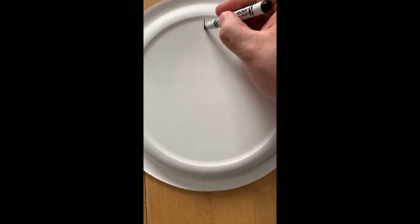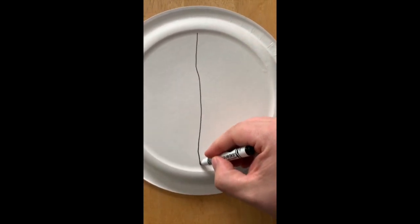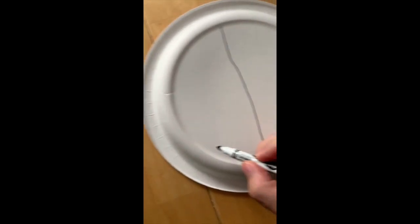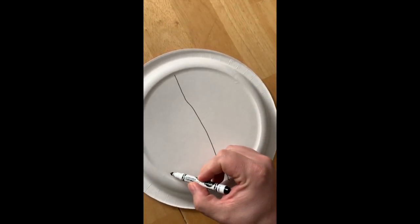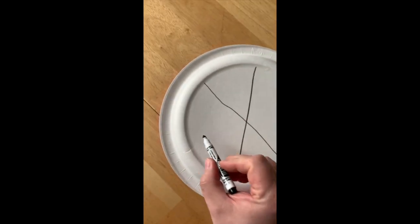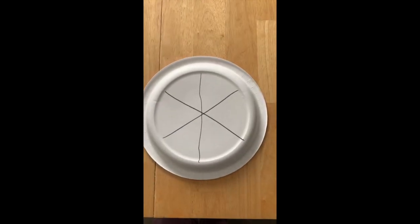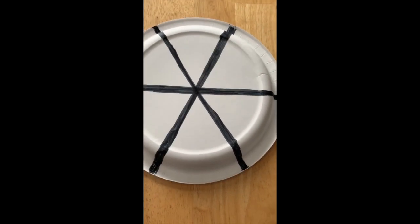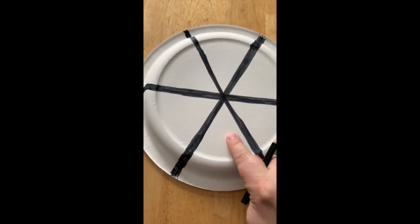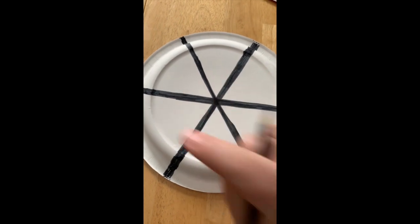First you're going to start by making six sections on your plate. Now your lines do not have to be equal, they don't have to be perfect, not at all. So you're going to cut it into sixths, and then just make sure you've got one, two, three, four, five, six pieces.